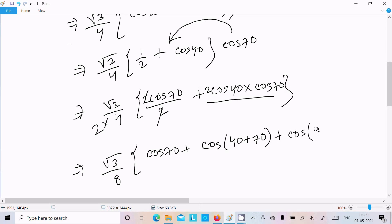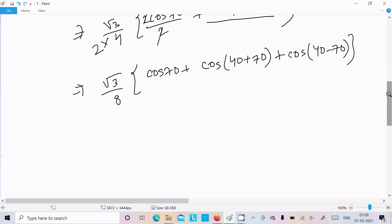Now root 3 by 8, here this is cos70, here cos110, and this is cos minus 30. Again root 3 by 8. So for cos70 we can write 180 minus 110, cos110.